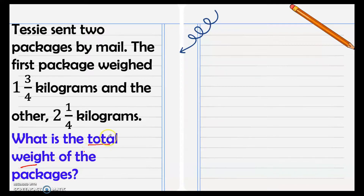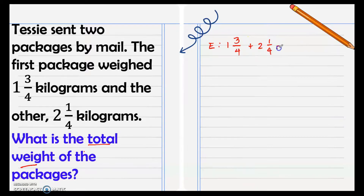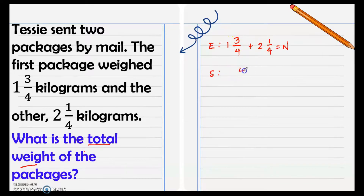To find the total weight of the two packages we need to add. Following the SM method — equation, solution, and answer — we write the equation: one and three-fourth plus two and one-fourth equals n. Since the fractions are similar fractions, we can add right away. We add the numerators: three plus one is four, then copy the denominator which is also four.